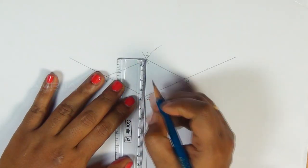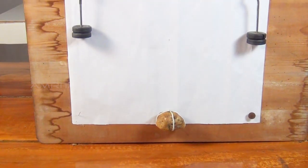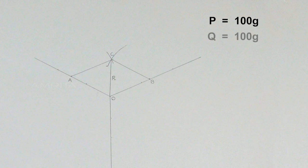This represents the resultant vector R which corresponds to the weight of the unknown body. OC multiplied by the scale will give you the value of the unknown weight S.